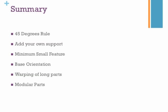That's the end of the episode. In summary: first, the 45-degrees rule to minimize the amount of support material. If you cannot minimize support, try to add your own custom support, which is usually much more intelligent than automatic support. Next, know the minimum small feature size your printer can handle. Then, orientation of the part determines both the amount of support needed and the strength of your part.